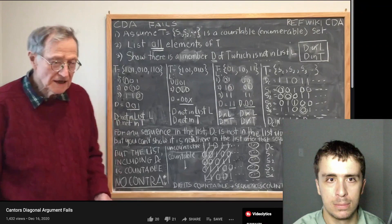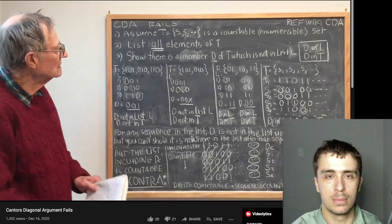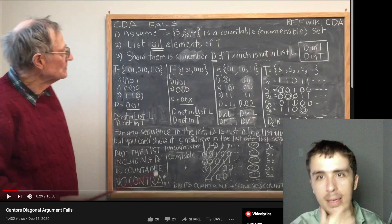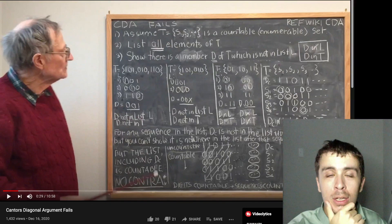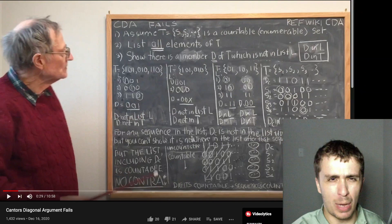The video says: 'To begin, you assume some set T with elements s1, s2...' and we're already going off the rails. Is he proving this in the general case? It seems like it, but we don't know what the s1 and s2 elements are. Are we proving that T is an uncountable set? I'm not sure what's actually happening here.